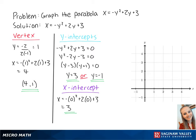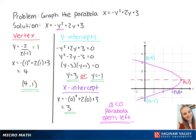We can plot the points on the graph. The vertex is at 4, 1, and the intercepts are at 0, 3, 0, negative 1, and 3, 0. Since the coefficient of y squared, a, is less than 0, the parabola opens left. If we connect the points on the graph, we get a parabola that looks like this. The axis of symmetry is the line that goes through the vertex at y equals 1. Now we have graphed and labeled our parabola.